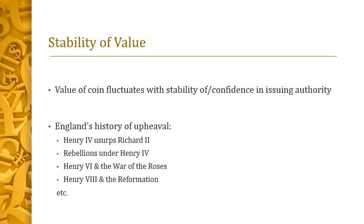Thinking about England's long history of disruption and upheaval — a history very much in the minds of Shakespeare's audience — we can see how political instability and economic instability are connected. Henry IV usurped Richard II and then faced rebellions; his grandson Henry VI and the War of the Roses tore the country apart; Henry VIII and the Protestant Reformation brought numerous periods of upheaval. The instability of one is tied closely to the instability of the other.